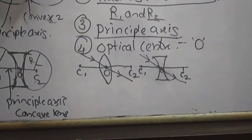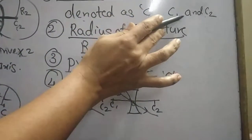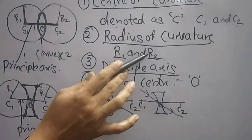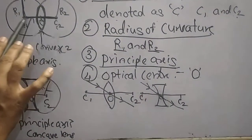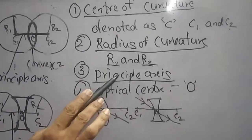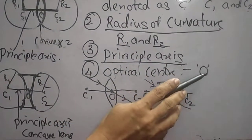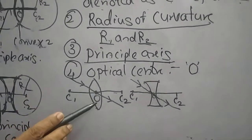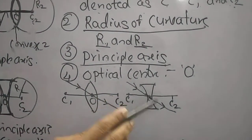We have now studied: center of curvature, denoted as C1 and C2; radius of curvature, denoted as R1 and R2; principal axis, which joins C1 and C2; and optical center, denoted as capital O — for both the convex lens and the concave lens.